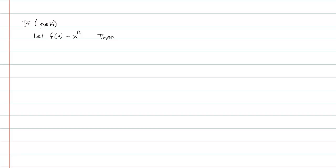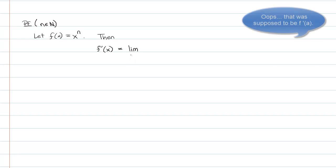As with all of our proofs, we go ahead and start with: let our function equal x to the n — that's what we want to take the derivative of — and I'm noting that n is in the natural numbers. The derivative of that function equals the limit definition. I'm actually going to use the version where x approaches a finite point rather than h approaching zero. So recall this one: f(x) minus f(a) all over x minus a. So plugging in, we get the limit as x approaches a of x to the n minus a to the n, all over x minus a.